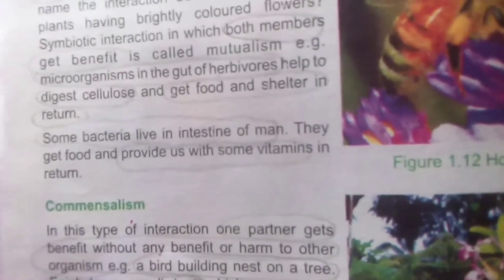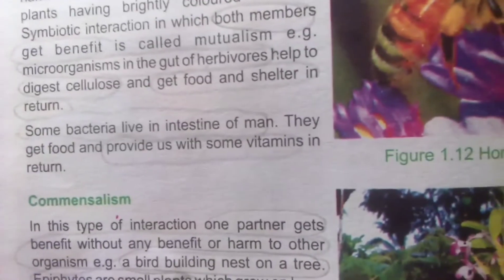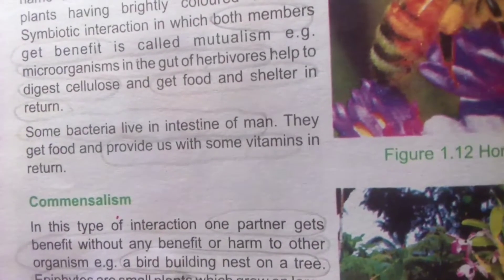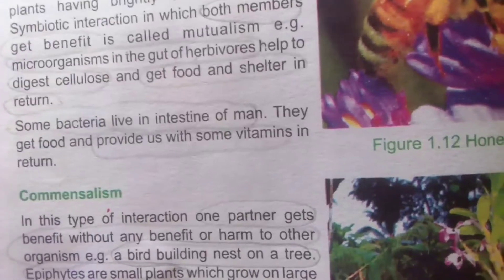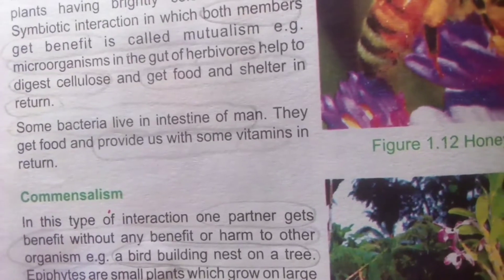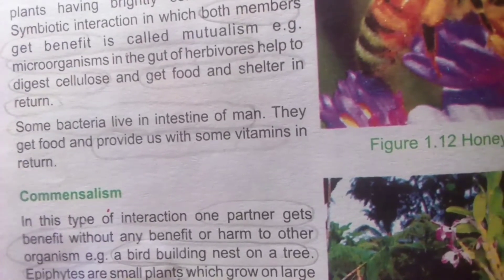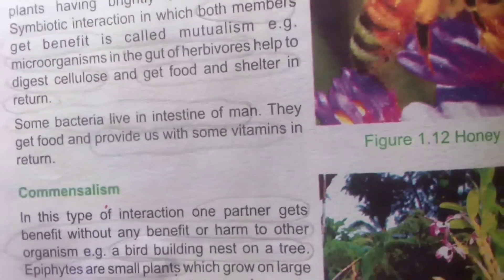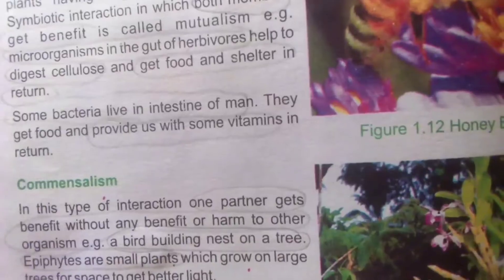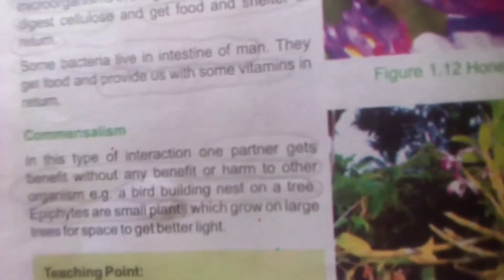Some bacteria live in the intestine of man — this is mutualism. This is an example of a human being. They provide us with some vitamins in return, so we also get vitamins. Both benefit from each other.